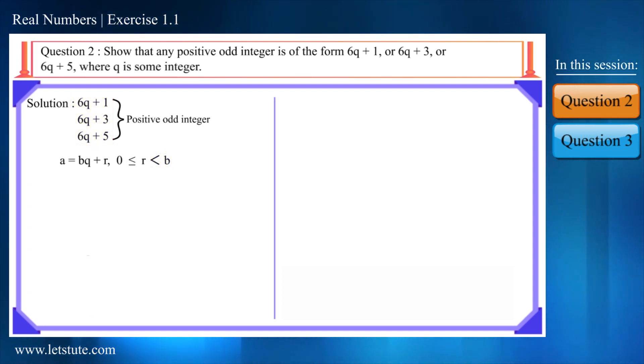Therefore, we can see that the possible value of r will be 0, 1, 2, 3, 4 and 5. Here if we replace the value of r with 0 then we will get a equal to bq.